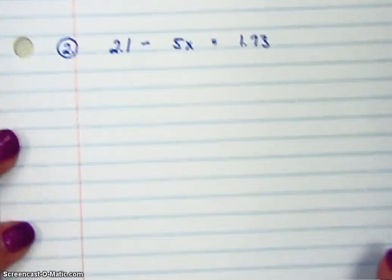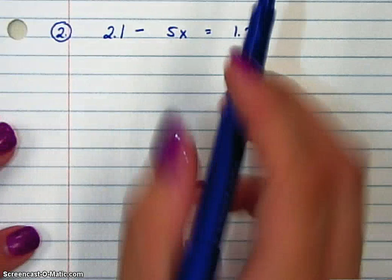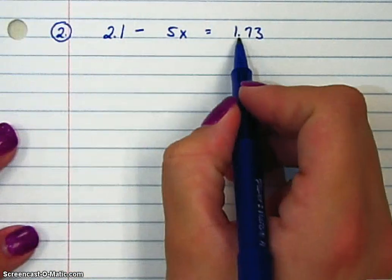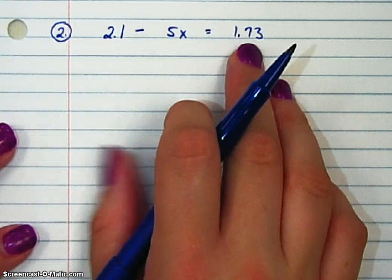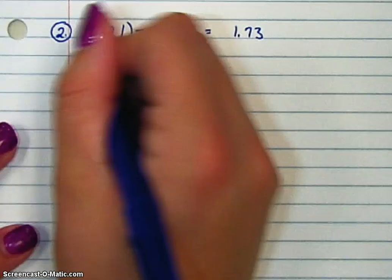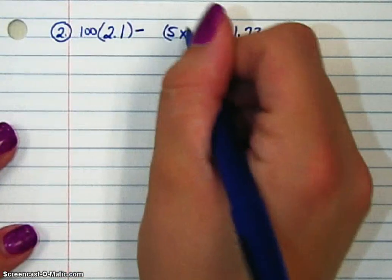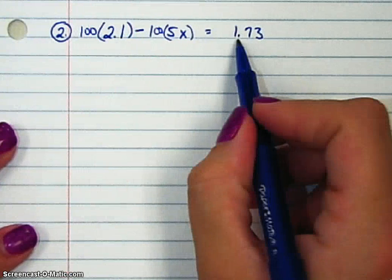So, number two. Notice this one is a little different, because this is tenths and this is hundredths. If I multiplied everything by ten, I would still have a decimal. So instead, I'm going to multiply everything by 100, because this is hundredths.